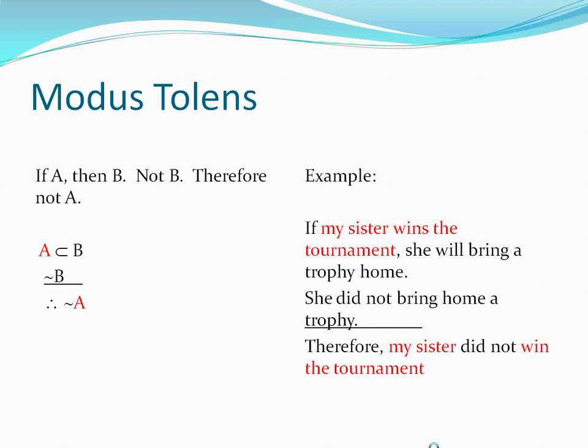Premise A is 'my sister wins the tournament,' and in the conclusion we have the denial of that. Likewise for B — 'she will bring home a trophy' — the 'did not' is not highlighted because 'she will bring home a trophy' is the premise; the 'not' is the denial. When you say 'not B' — 'not, she will bring home a trophy' — that is when you represent the 'not' symbolically.